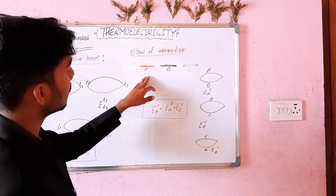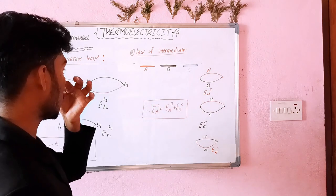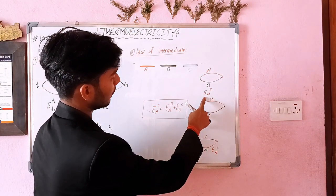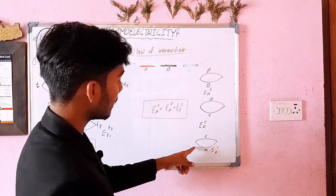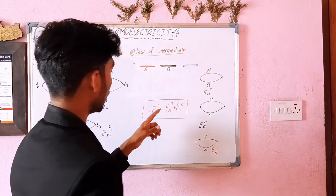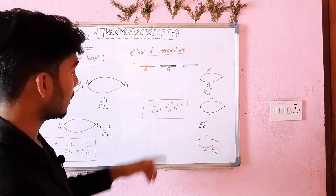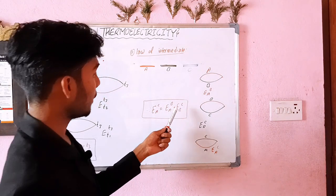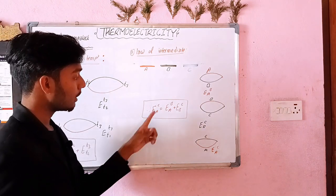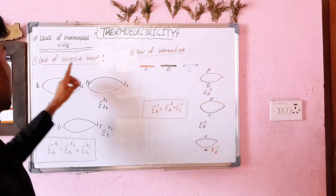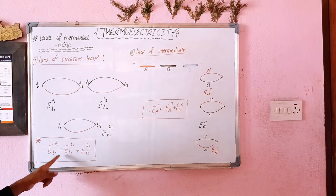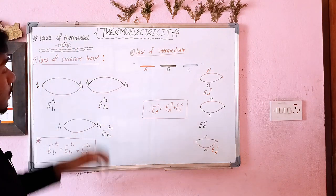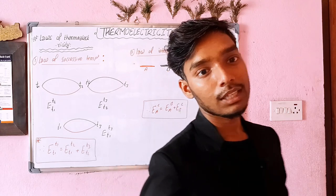The Law of Intermediate Metals states that if we have three conductors A, B, and C, then E(A,C) = E(A,B) + E(B,C). So the EMF between A and C equals the sum of EMF between A and B plus EMF between B and C. This is the Law of Intermediate Metals in thermoelectricity.